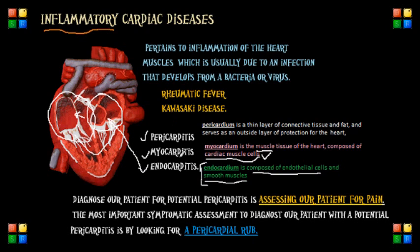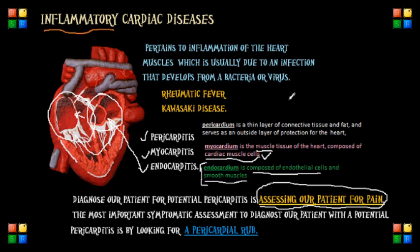I want to quickly go over important things to remember for your NCLEX exam. One of the ways to diagnose a patient for potential pericarditis is assessing for pain, but the problem is that pain can usually also be associated with other conditions. So one of the more important symptomatic assessments is looking for what we call the pericardial rub.